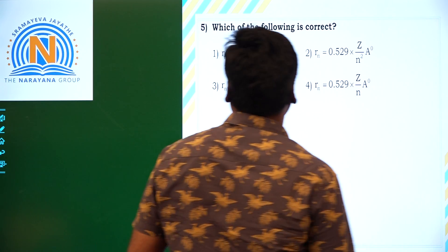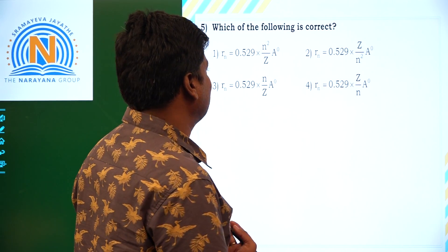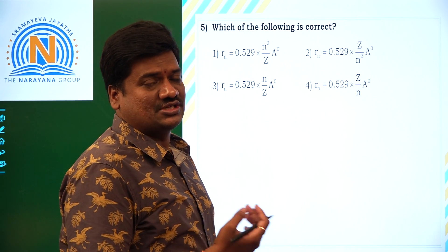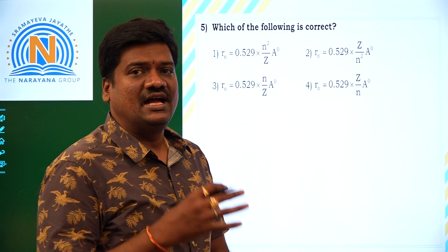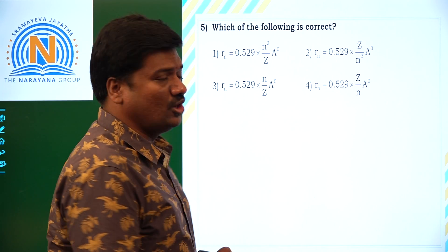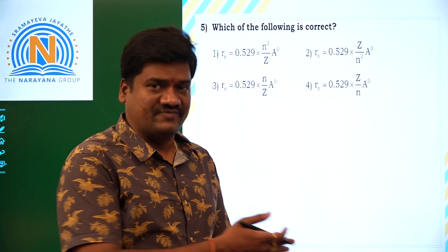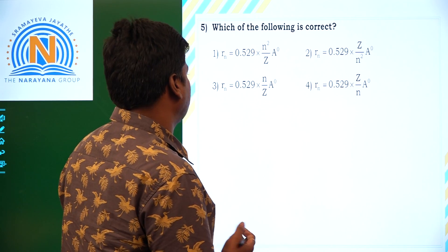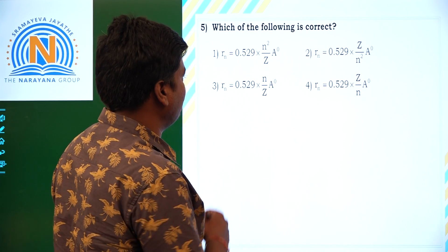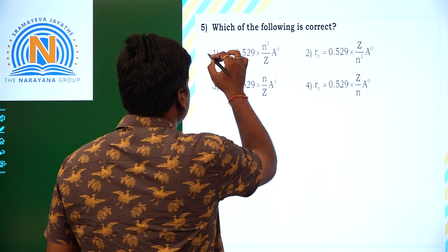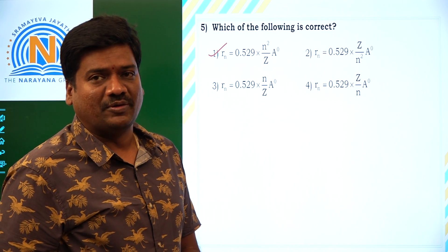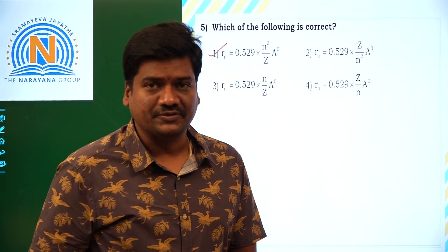Now the last question: which of the following is correct? This is also based on Bohr theory, asking about the radius formula. The formula is r = 0.529 into n square by z, in angstrom units. Looking at all the options, we go for n square by z as the first option — just as we discussed and calculated for different problems. Thank you.